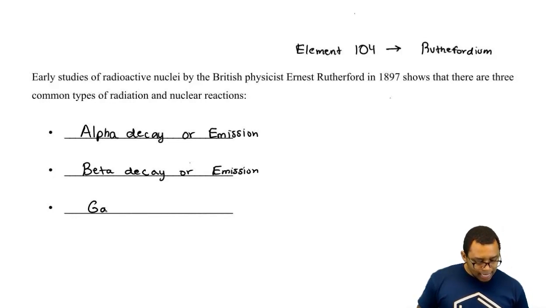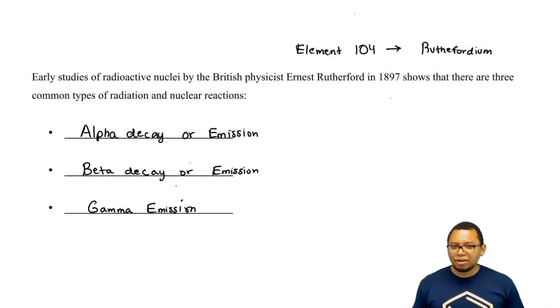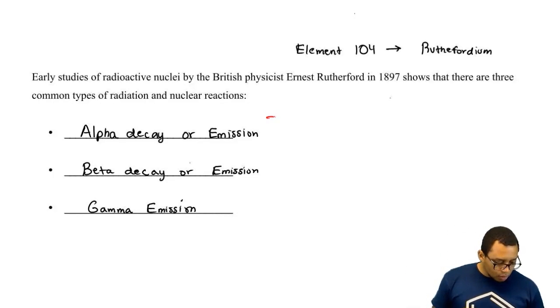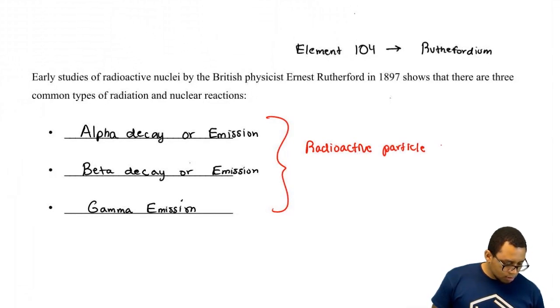And then finally, we have gamma emission. You tend to just hear it as gamma emission. You usually don't hear the term gamma decay. Now, what does the word decay or emit mean? Well, that means that the radioactive particle will be a product.